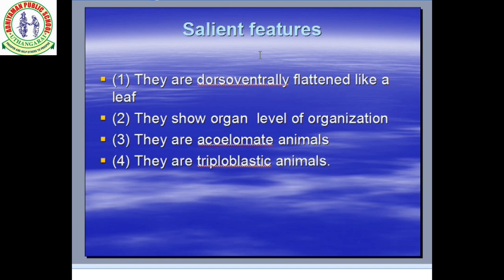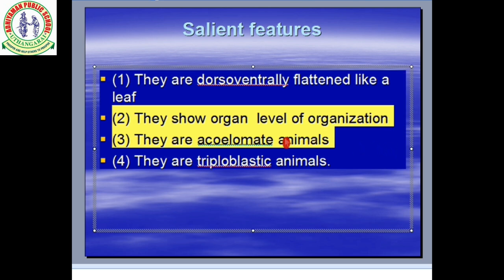What are the salient features of Platyhelminthes? They are dorso-ventrally flattened like a leaf. They show organ level of organization — you know that ctenophora has tissue level, but Platyhelminthes have organ level of organization. They are acoelomate animals. Acoelomate means absence of coelom. Coelom is the cavity between the body wall and the gut wall. So Platyhelminthes are acoelomate — coelom is absent, keep in mind.